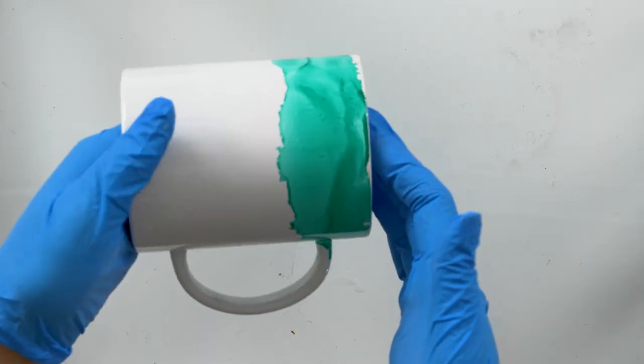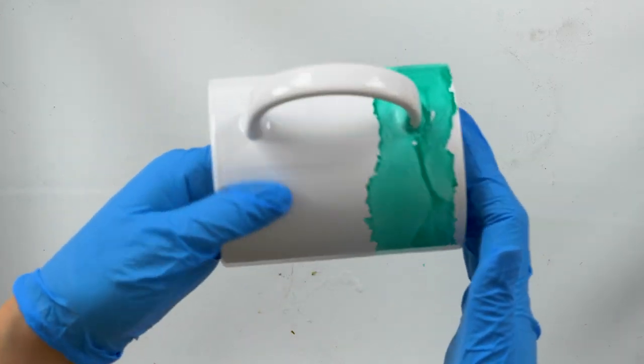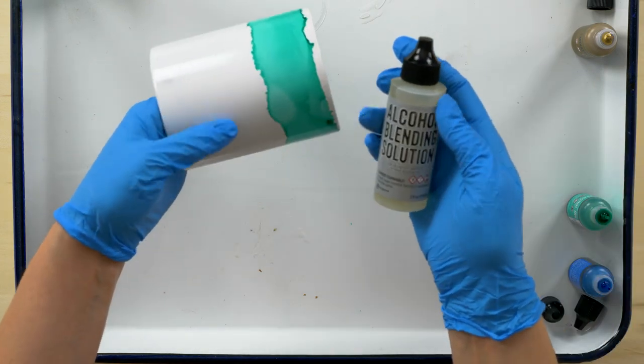Keep hand tumbling. Notice how the alcohol ink starts to spread out and change. Each mug that you create will be different. If you want to thin out the color, you can use an alcohol ink blending solution.